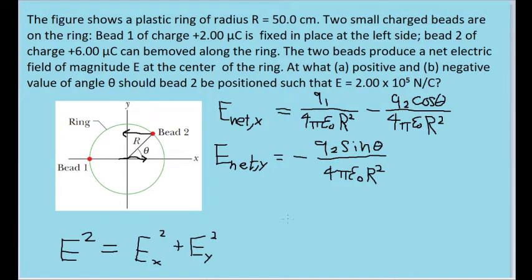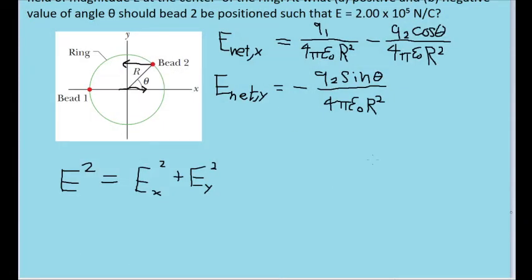Now we have these formulas for the components of the field on both axes, but we need to relate this to the total magnitude of the electric field at the center somehow. According to the Pythagorean theorem, the square of the magnitude is equal to the sum of the squares of both components. So let's first find formulas for the squares of both of the components.